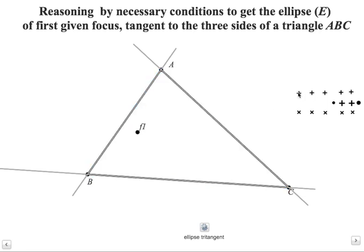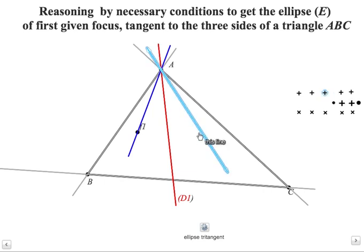So we start now as these three lines must be the tangent line to our ellipse. We start by the bisectors of angle A. We know that this blue line, its symmetry contains F2. So this line will contain F2. As these two lines also are tangent lines to our ellipse.